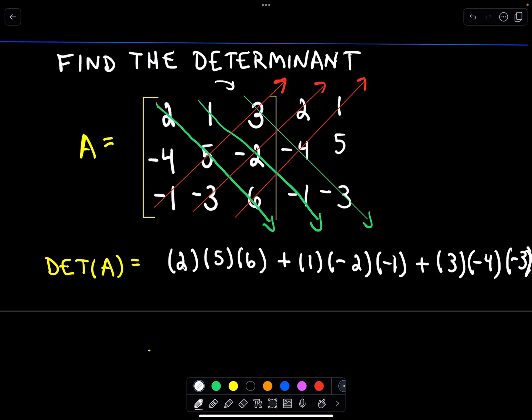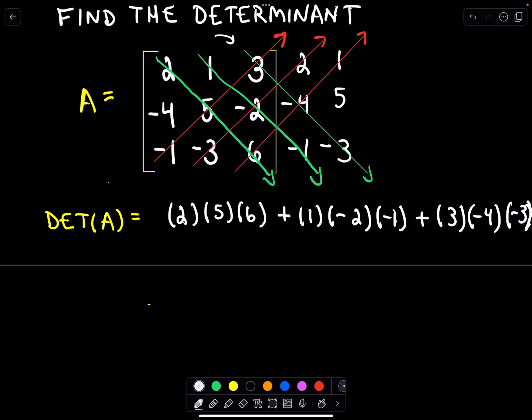So just like before, we multiply those values together. So if I look at my first arrow, that's going to be negative 1 and then times 5 and then times 3. So negative 1 times 5 times 3.